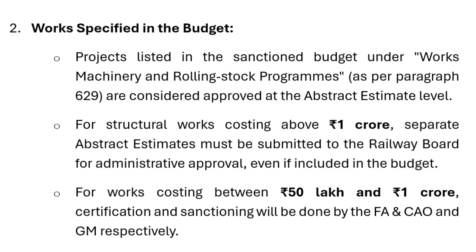For structural works costing above 1 crore rupees, separate abstract estimates must be submitted to the Railway Board for administrative approval, even if included in the budget. For works costing between 50 lakh rupees and 1 crore rupees, certification and sanctioning will be done by the FAR and CAO and GM respectively.